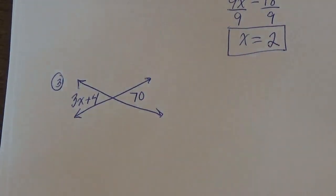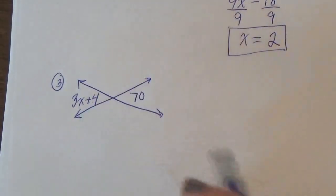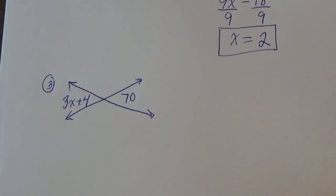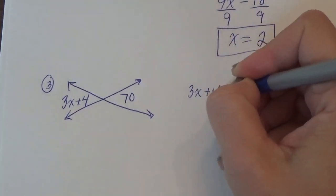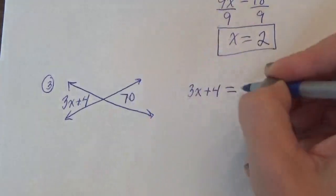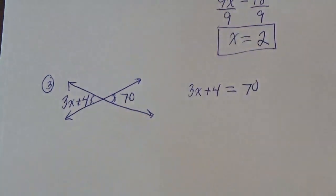So are they next to each other or opposite each other? Well, hopefully you can tell they are opposite each other. So these are vertical angles. So we're going to take the 3x plus 4. And that's going to equal the other side. Can you tell this angle kind of looks the same as that one? They are the same.